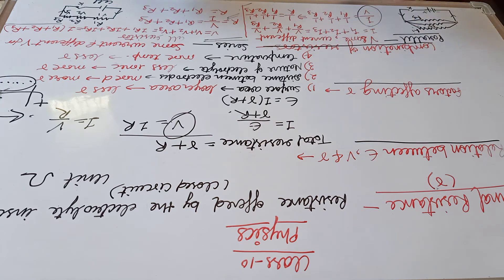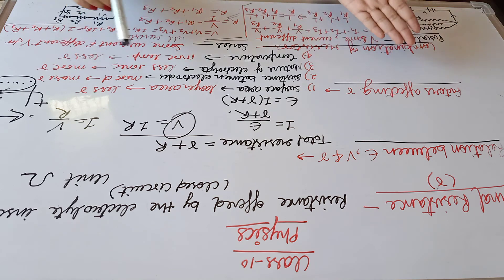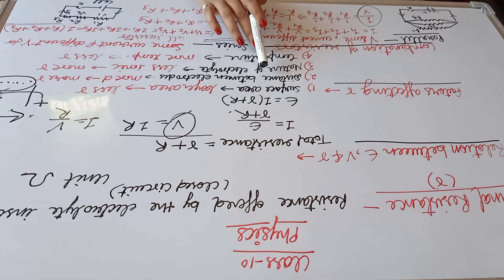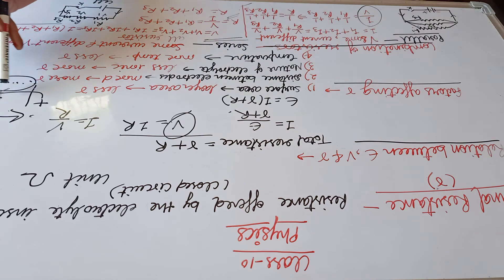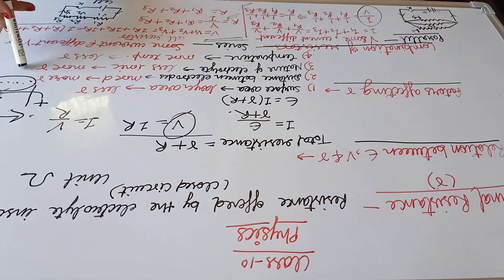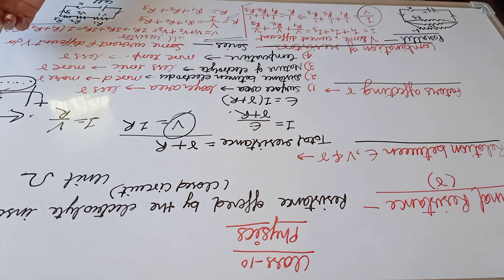How internal resistance is affected by these factors: First, surface area — a larger area offers less resistance because if the area is more, electrons have more space to move. Second, distance between the electrodes — if the distance is more, more resistance is offered because electrons travel farther, causing more energy loss. Third, nature of electrolyte — if the concentration is more or it is less ionic, it offers more internal resistance.